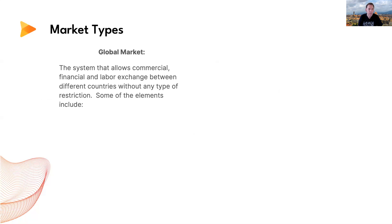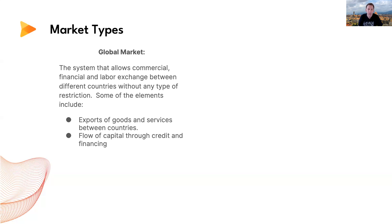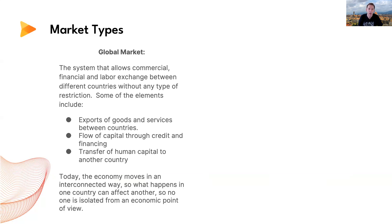Next is a global market — the system that allows commercial, financial, and labor exchange between different countries without restriction. Elements of a global market include exports of goods and services between countries, the flow of capital through credit and financing, and transfer of human capital to another country. Today, the economy moves in an interconnected way, so what happens in one country can affect another — no one is isolated from an economic point of view.